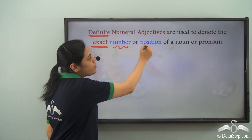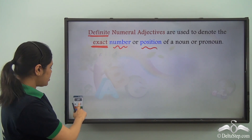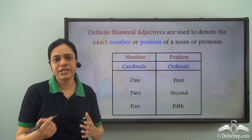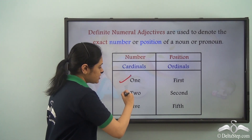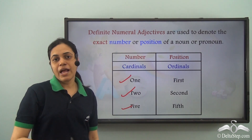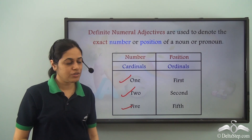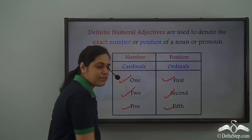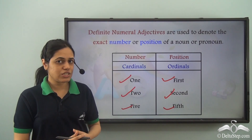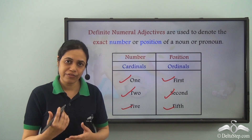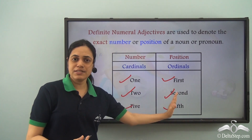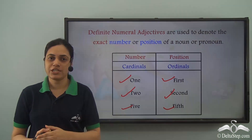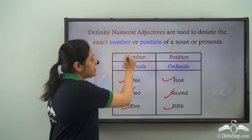What do I mean by number or position? Number means 1, 2, 3, 5, 30, 100 — any exact number. And position can be denoted by 1st, 2nd, 3rd, 4th, 5th, 10th, 30th. In both cases, we say that it is a definite numeral adjective.